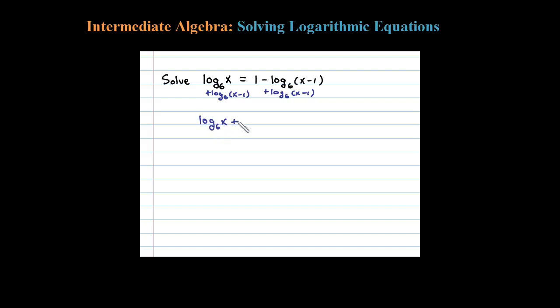Log base 6 of x plus log base 6 of x minus 1 is going to be equal to 1. Now that we have our logarithms on the same side we can simplify them down to one log. This is equivalent to log base 6 of the product x times x minus 1, using the properties of the logarithm.